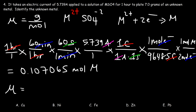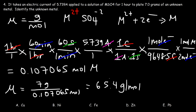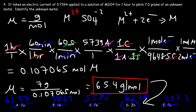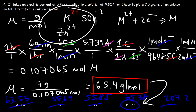Now calculate the molar mass: 7 grams divided by 0.107065 moles gives approximately 65.4 grams per mole. Copper is 63.55, nickel is 58.69, and iron is 55.85 — none of those match. Zinc has a molar mass of 65.38 grams per mole, which matches. Lead is 207.2, so that's out. The unknown metal is zinc, which also carries a plus 2 charge consistent with the MSO4 formula.